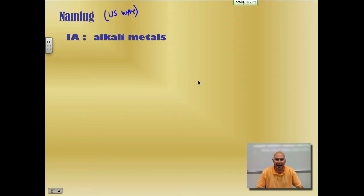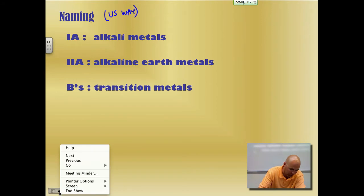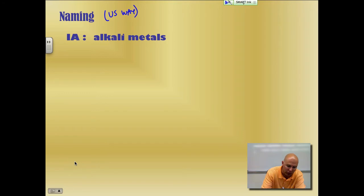1A, group 1A, family 1A is the alkali metals, the specific name for them. And here they are. We have lithium, sodium, potassium, rubidium, cesium, and francium. Alright, so those are the alkali metals.